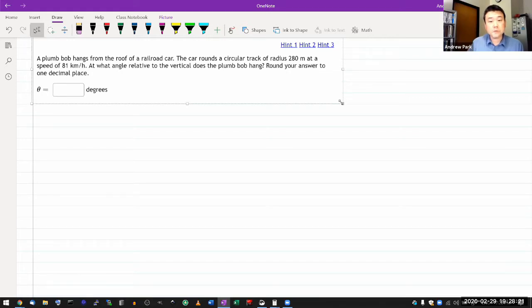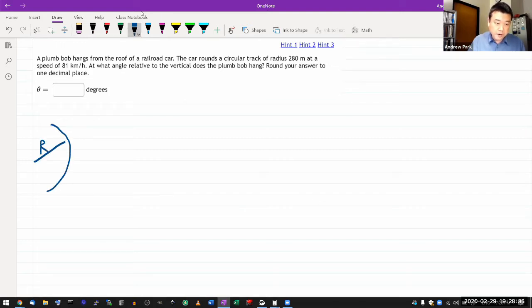If I were drawing like a top down view of that railroad car, then this might be what it looks like. You have a railroad that has a circular track of radius r, and I have some car that's making that track at some speed. Now, here's the problem with this particular view or the top view is that the plumb bob is hanging downward. So whatever angle that's making, I don't see that from this view.